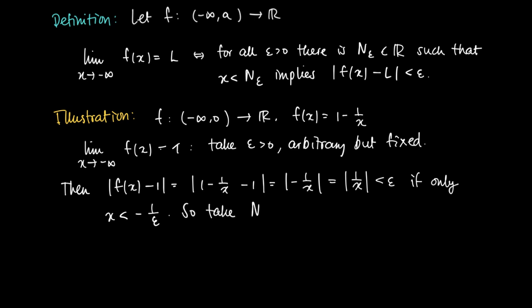So according to the definition above, we might take N_ε = -1/ε. Since then, if we take x < N_ε, then the absolute value of f(x) - 1 is smaller than ε.